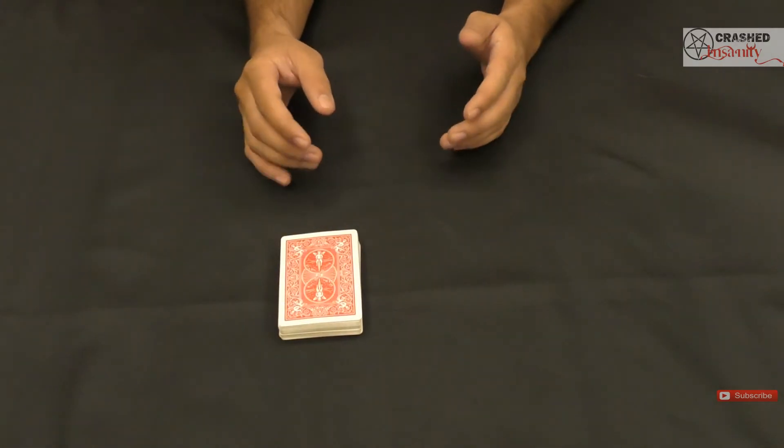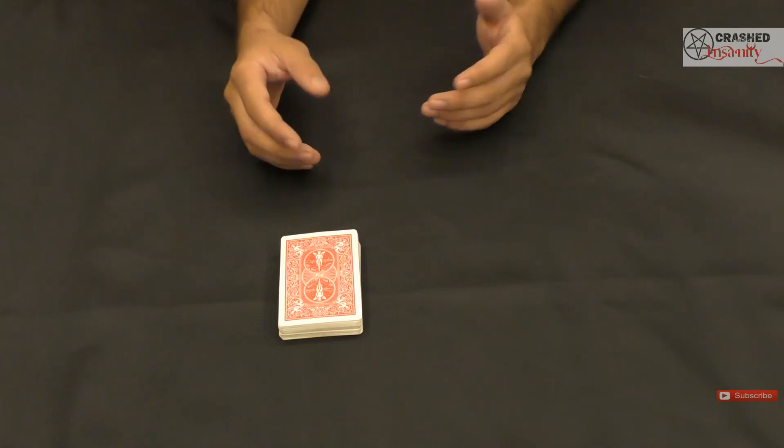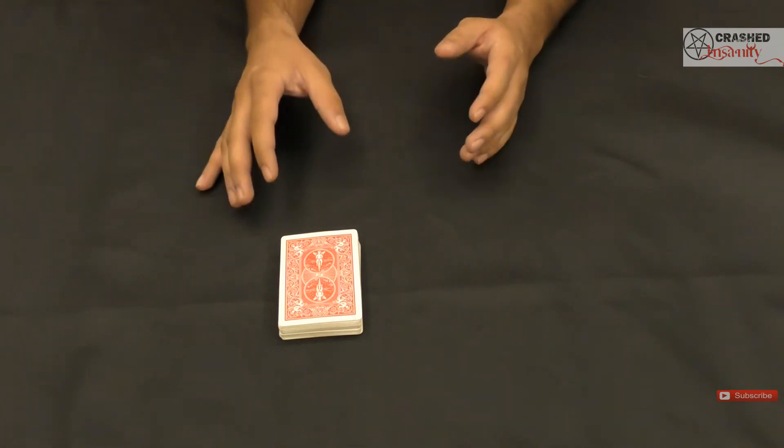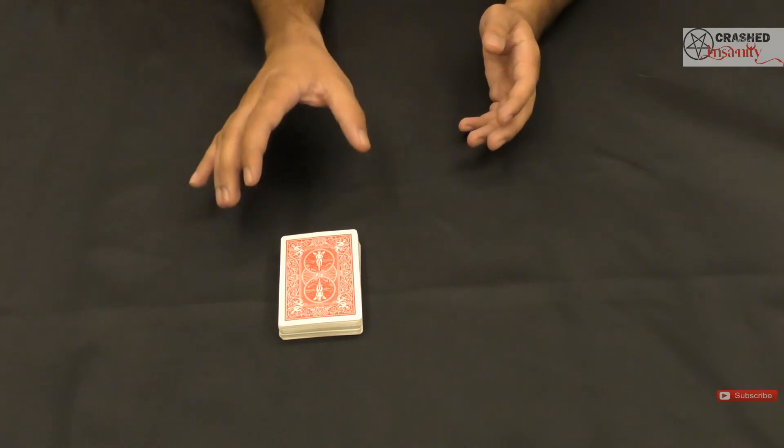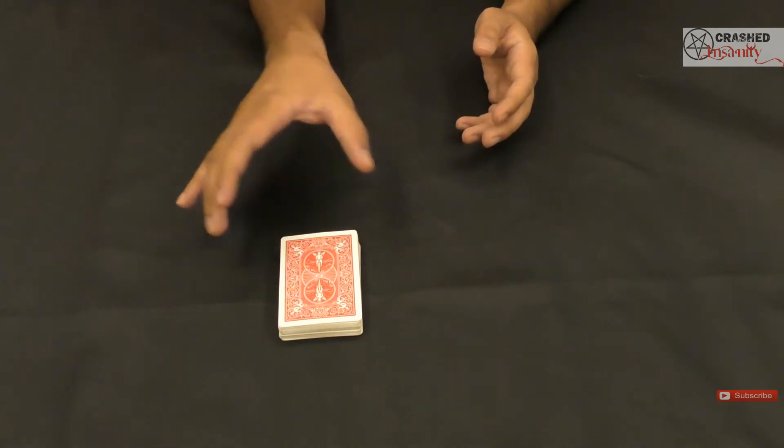We'll be using the power of intuition to find where the card is. Now it's extremely difficult to figure out where the card is between 52 cards. However, just by using my intuition, I will cut the deck to a particular point.